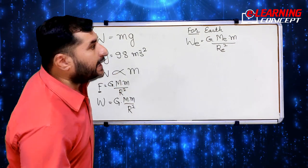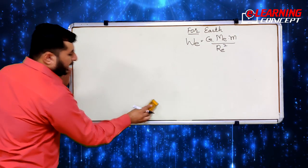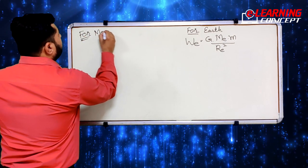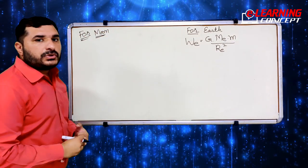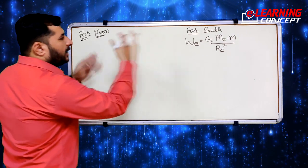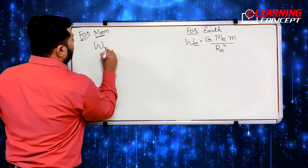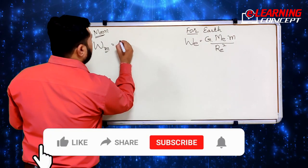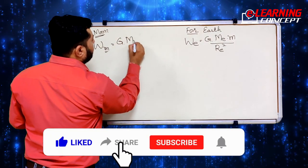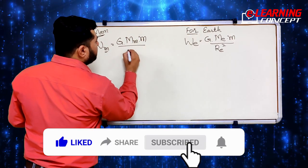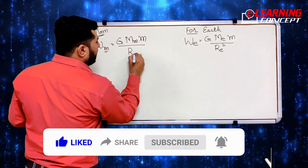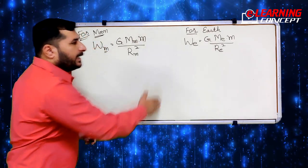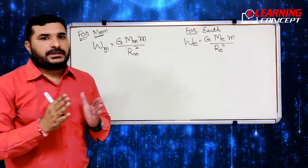Now if we want to write this equation for the Moon, we can write it as: for Moon, W_m = G × M_m × m / r_m², where 'mm' suffix denotes the Moon. The mass of the object m remains the same. So here we have represented the weight formula for both the Moon and the Earth.